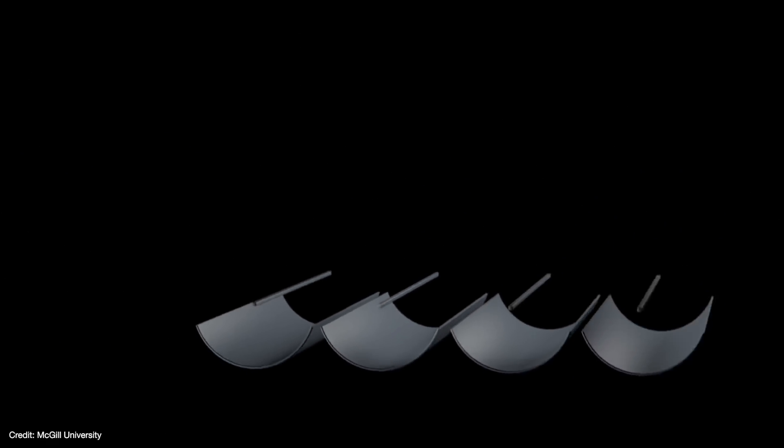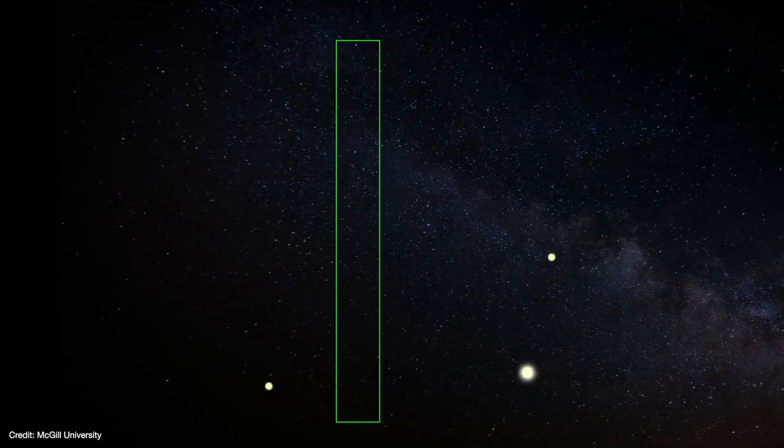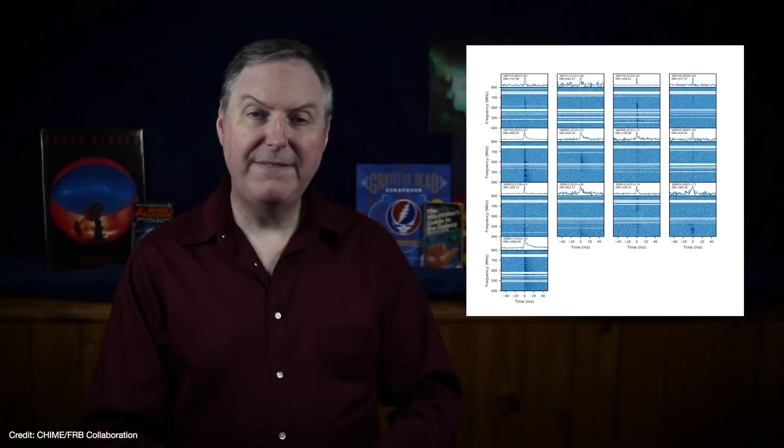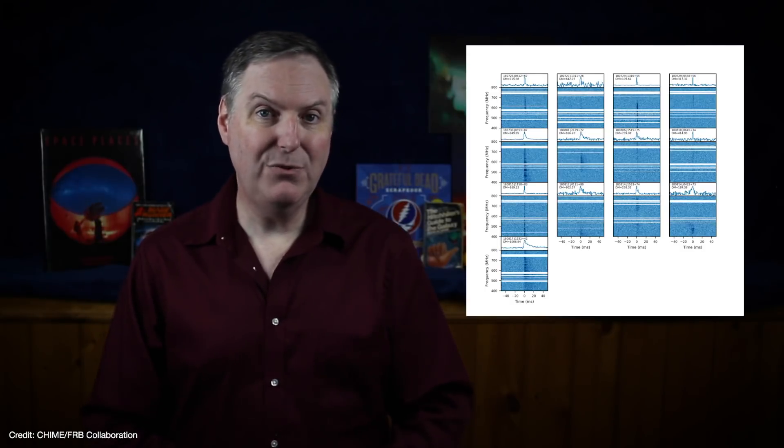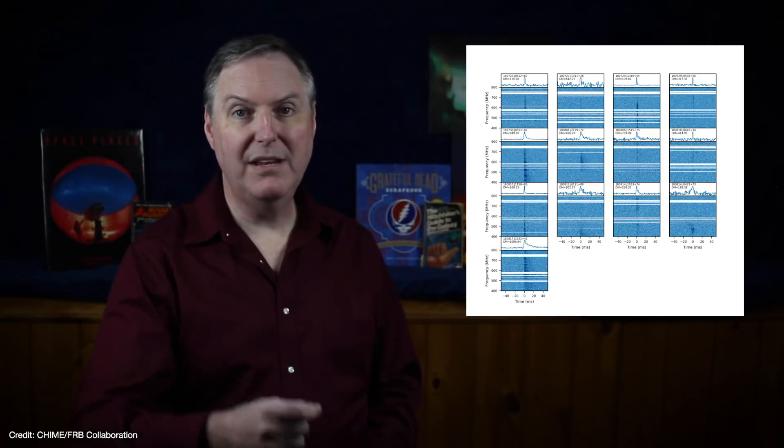Each pipe is fixed in place, so CHIME doesn't steer like an ordinary radio dish. Instead, it scans a long rectangle of the sky stretching from north to south. Since Earth rotates, CHIME sees essentially the entire northern sky every 24 hours. Any FRBs that go off in its field of view are detected. In fact, CHIME detected 13 new FRBs while it was still being commissioned in 2018. Among them was a second repeating source.